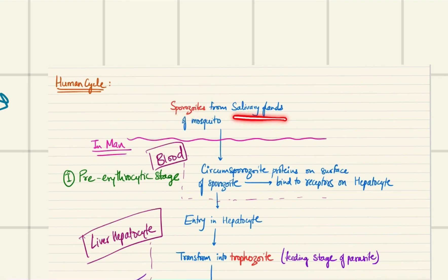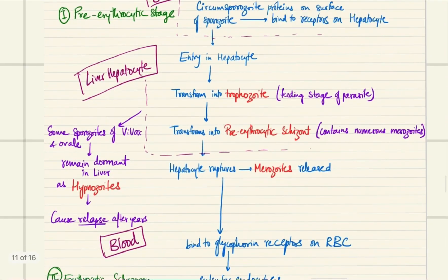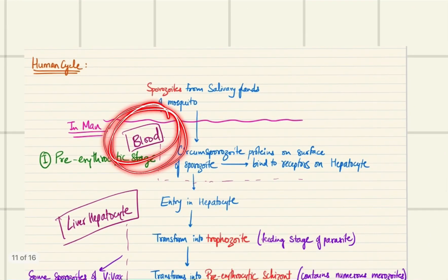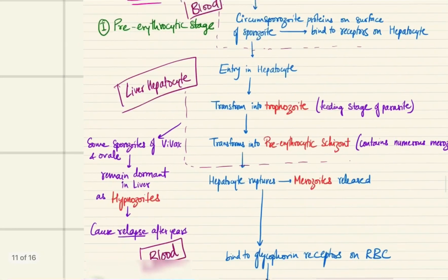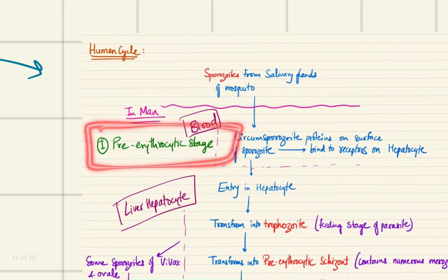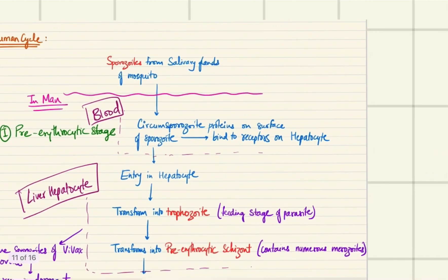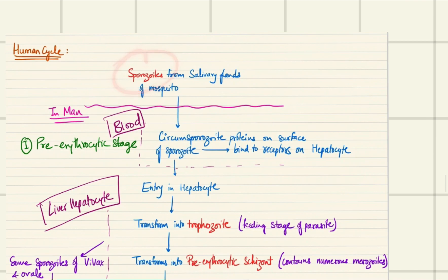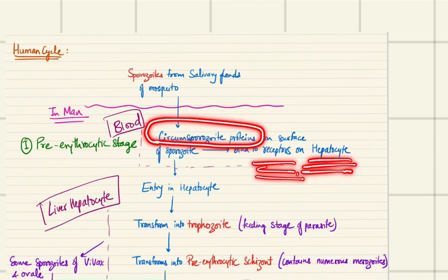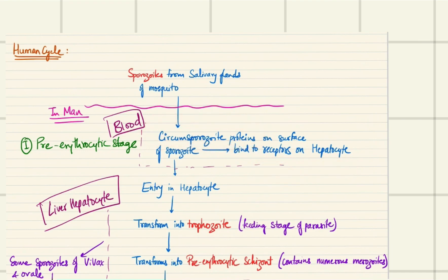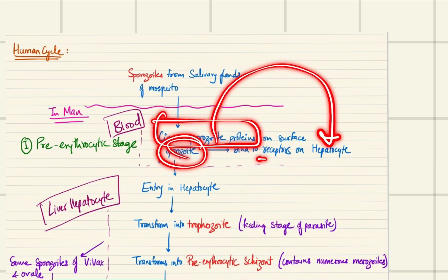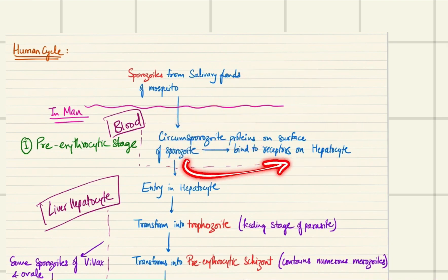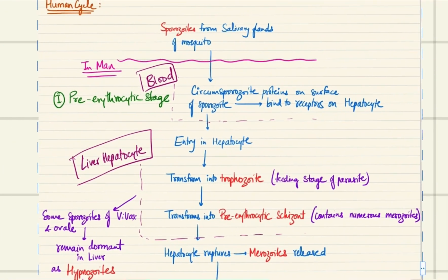These sporozoites are present in the salivary glands of the mosquito, which on bite enter the bloodstream of the human. Since we have not yet infected the RBCs, we are talking about the pre-erythrocytic stage here. In the pre-erythrocytic stage, the sporozoites which have entered actually bind to the hepatocytes via circumsporozoite proteins on their surface binding to receptors on the hepatocyte, and they gain entry.